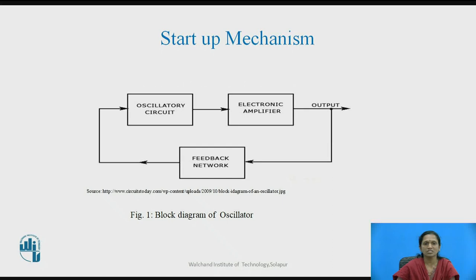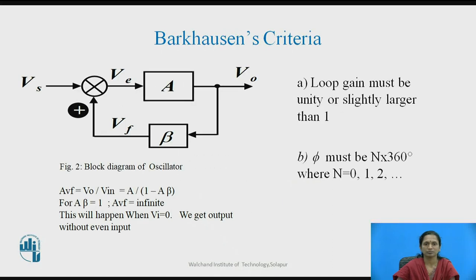Now we will see how this feedback provides oscillation. Figure 2 shows the block diagram of an oscillator circuit where components are arranged as a closed-loop system, where A is the gain of the amplifier, beta is the feedback factor, and v_s is the input signal.